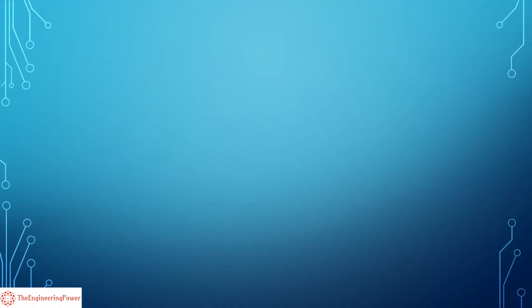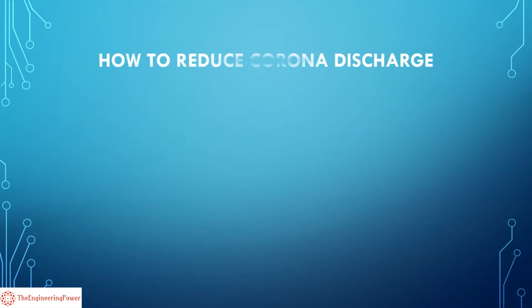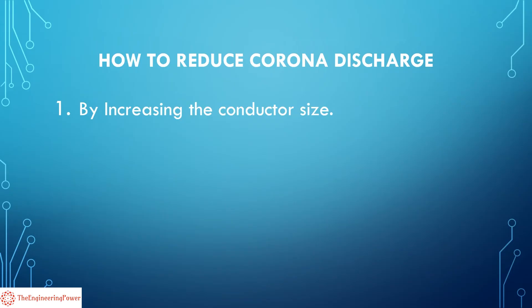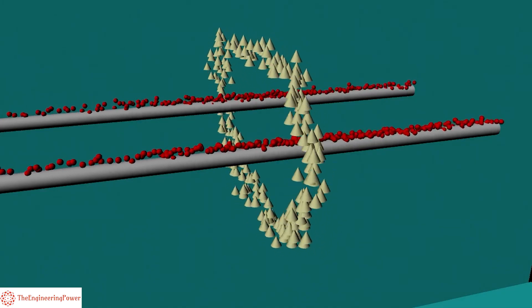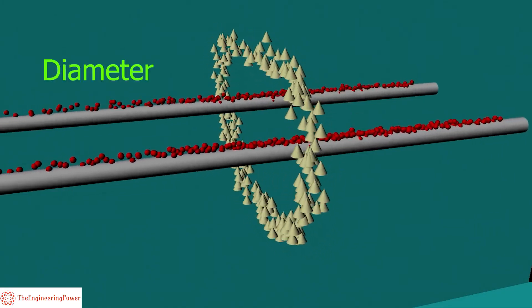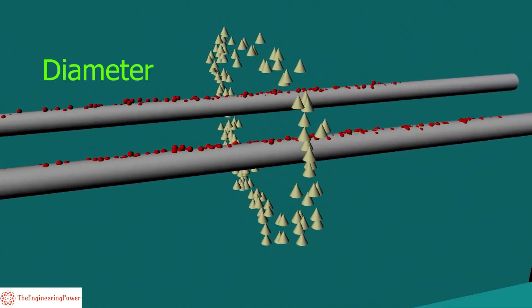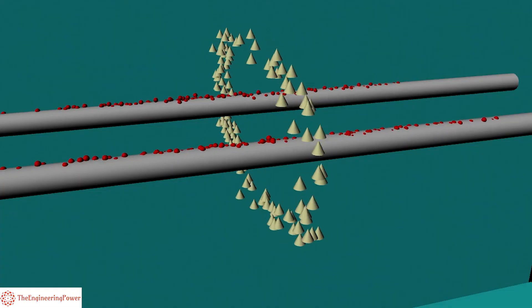Now we discuss some of the methods to reduce corona discharge. The first method is by increasing the conductor size. By increasing the diameter of the conductor, the corona discharge can be reduced. That is why ACSR conductors are mostly used on high voltage transmission lines because of their larger cross-sectional areas.